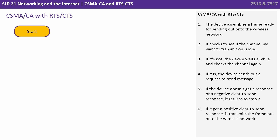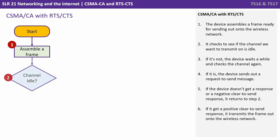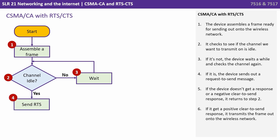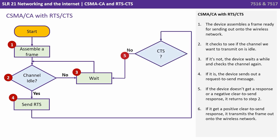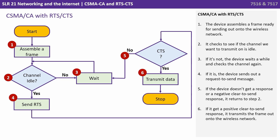Now let's look at the same protocol but with RTS/CTS. It starts the same — the device assembles a frame ready for sending out on the wireless network and checks to see if the channel is idle. If not, the device waits and checks the channel again. If it is idle, the device sends out a Request to Send message. If the device doesn't get a response, or gets a negative Clear to Send response, it returns to step two. If it gets a positive Clear to Send response, it transmits the frame out onto the wireless network.